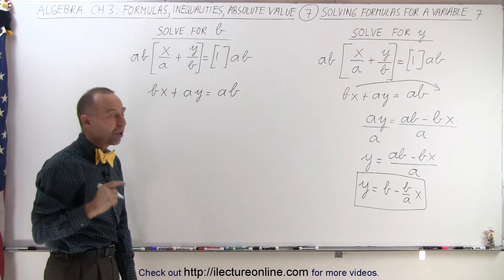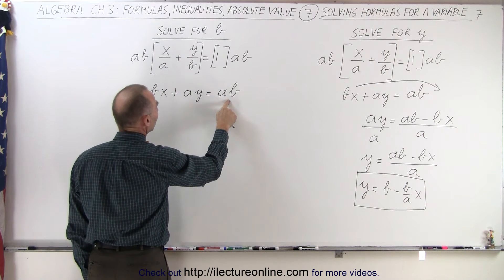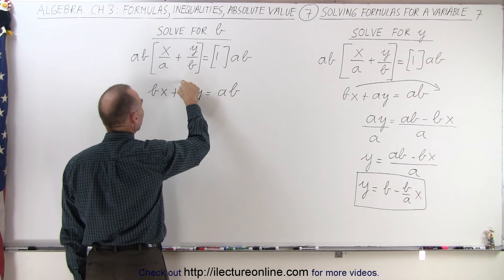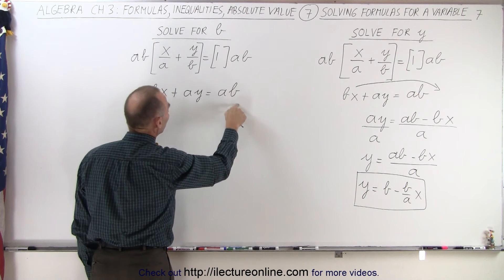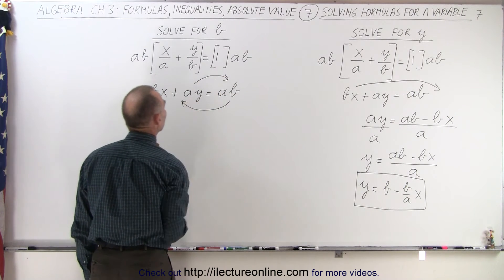But in this case, I'm solving for b. Notice I have a b here and I have a b over there. That means this b needs to go to the left and the ay needs to go to the right. So the ay moves to the right, the ab comes to the left.